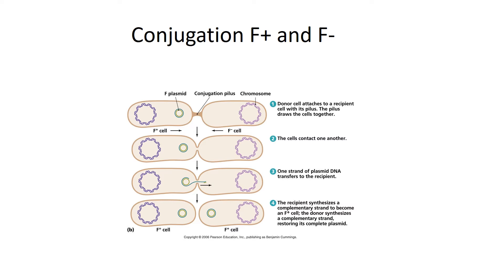In conjugation between an F-plus and an F-minus cell, my F-plus donor bacterium attaches to my F-minus recipient bacterium using a conjugation or sex pilus. The two bacteria are drawn closer together, and then one strand of the fertility plasmid is transferred from my F-plus to my F-minus bacterium through the sex pilus. Once the strand is transferred, both of them make the complementary strand.